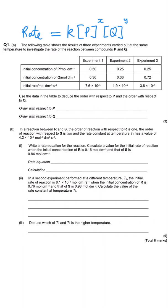In questions like this we need to appreciate what the table is showing us. They do an experiment with a certain concentration of P and Q and measure the rate of reaction. Then they repeat the experiment with different concentrations of P and Q and a different rate, and do it a third time with another different set of concentrations and rate.